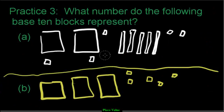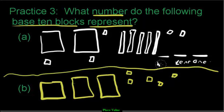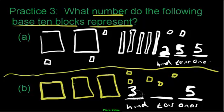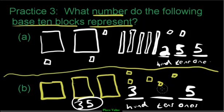Take a moment and try the next practice question on your own, then come back when you're ready. What number do the following base ten blocks represent? Label the spots: ones, tens, hundreds. Count them - two hundreds, so write a two. Two hundreds make two hundred, five tens make fifty, five ones make five: two hundred fifty-five. The last question - don't get fooled - there are just five ones. We have no tens, so in the tens spot we write a zero. The number is three hundred five.